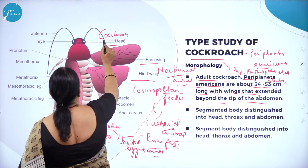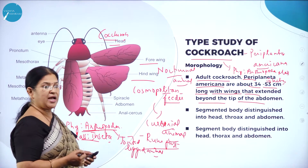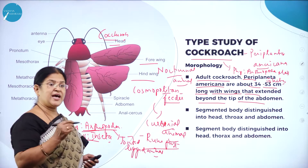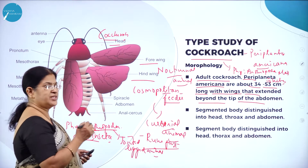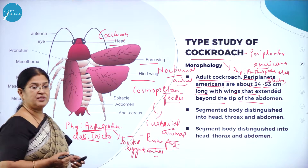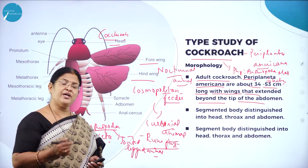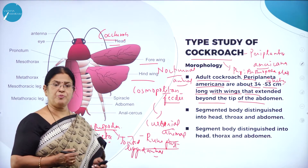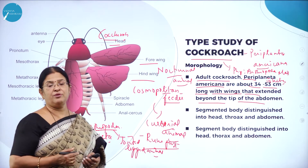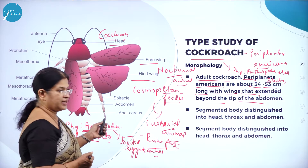Here you can see the forewing, hind wing, head, and antenna. Antennae are very important for sensing the environment. The eye of cockroach is very unique — it is called a compound eye having mosaic vision with around 2000 units called omatidia. The head includes this unique compound eye and very important mouth parts called trophic structures. It is a cosmopolitan feeder because of its efficient mouth parts.